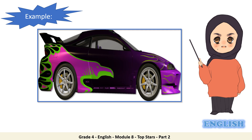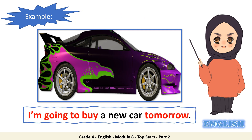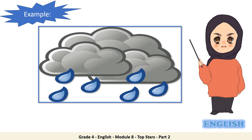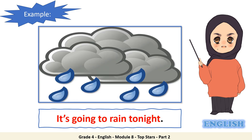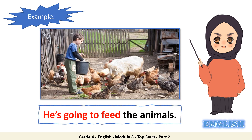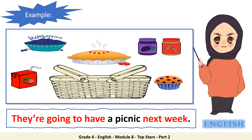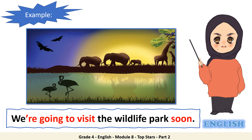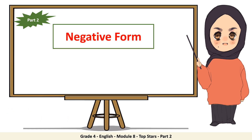Let's have some examples: I'm going to buy a new car tomorrow. It's going to rain tonight. He is going to feed the animals. You're going to have a picnic next week. We're going to visit the wildlife park soon.